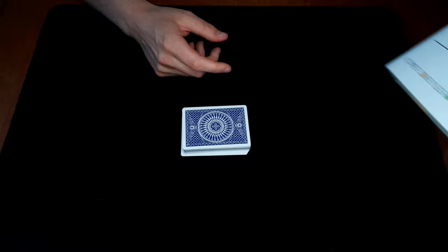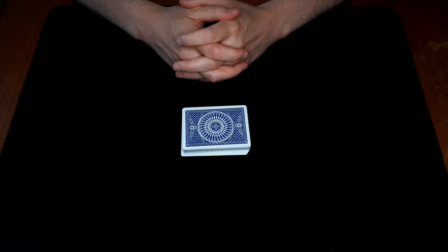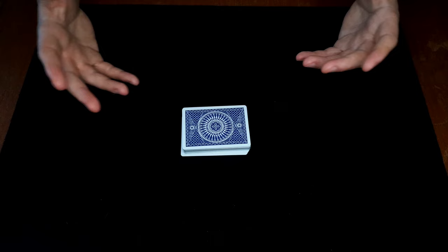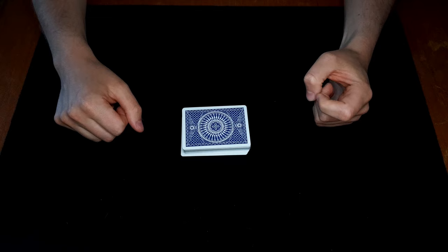In volume three he goes through the Zarrow shuffle. This is where I first learned it and it's a wonderful source. Another must-watch, I believe, is the Jason England download. It's a wonderful tribute to Herb Zarrow, and as always, Jason England's teaching and his style is just on another level. So please get that, and he will also go through a number of sources in that tutorial if you want to look even further.